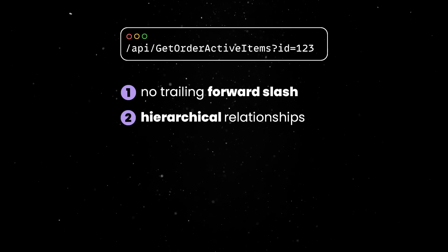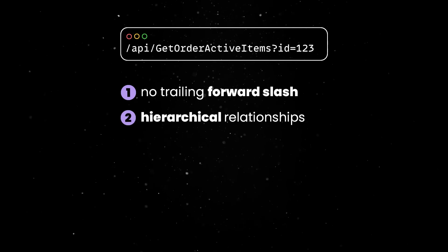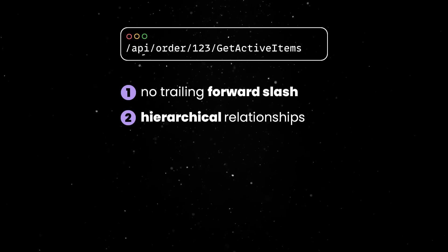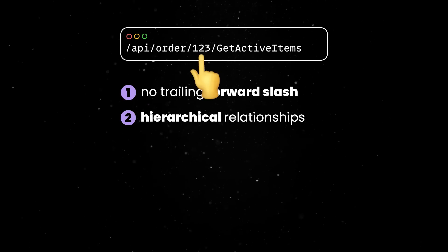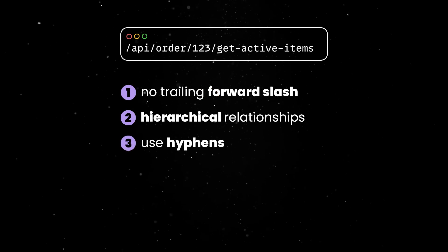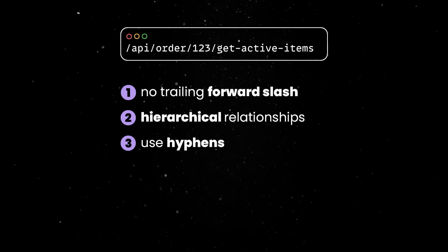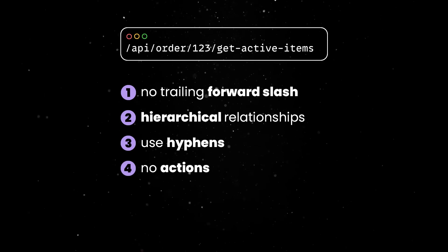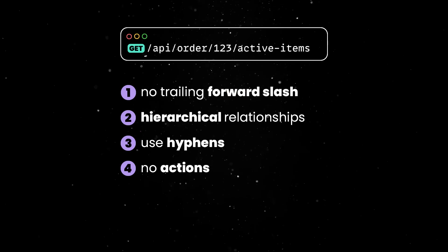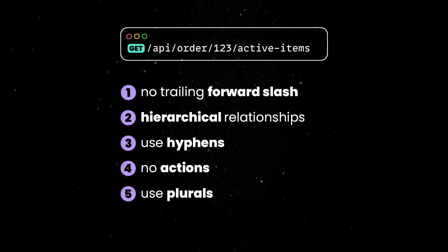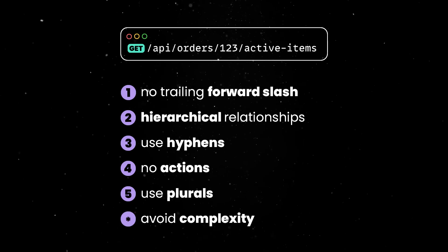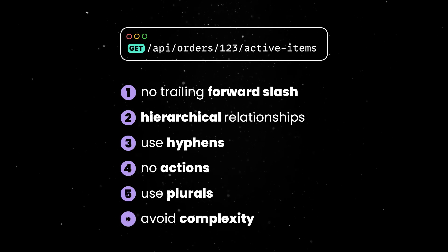First, a trailing forward slash should not be included in URIs — the last character adds no semantic value and may cause confusion. Second, the forward slash separator must be used to indicate a hierarchical relationship; in our case, there is a hierarchy between orders and items. Third, we should use hyphens to make it easier to scan and interpret endpoints. Fourth, we should focus on resources, not actions, so the GET verb should be removed from the URI. Finally, always use plural names to provide consistency between endpoints.